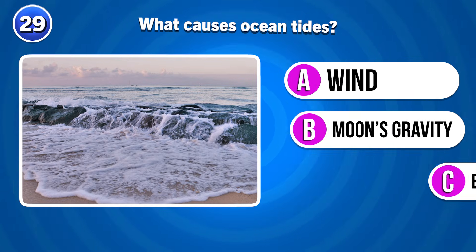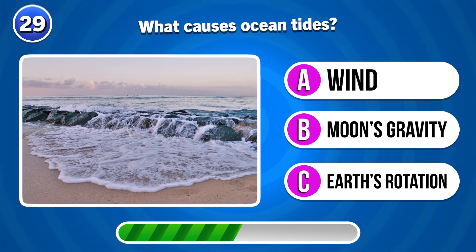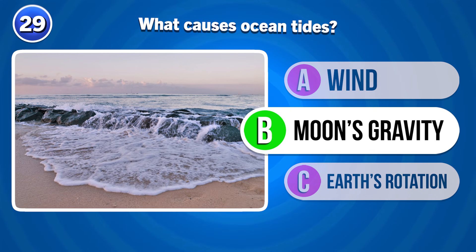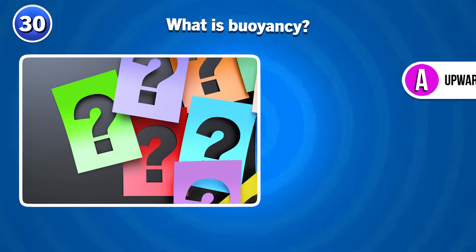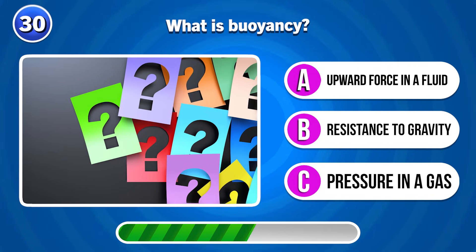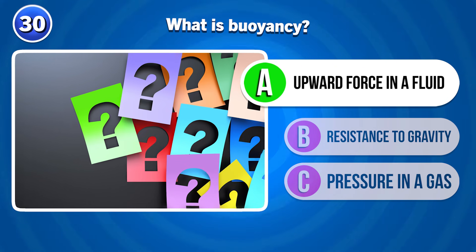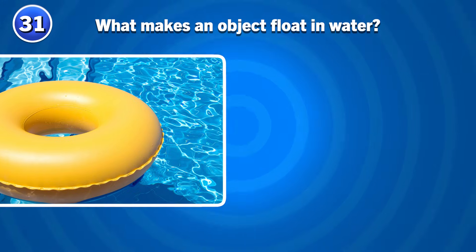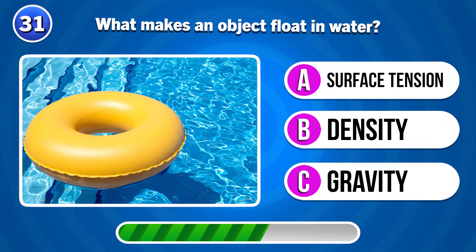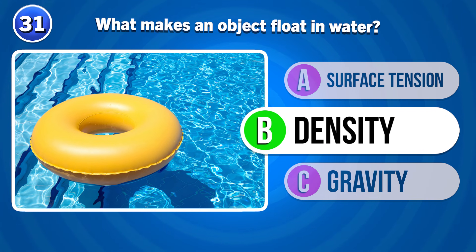What causes ocean tides? Moon's gravity. What is buoyancy? An upward force in a fluid. What makes an object float in water? It's density.